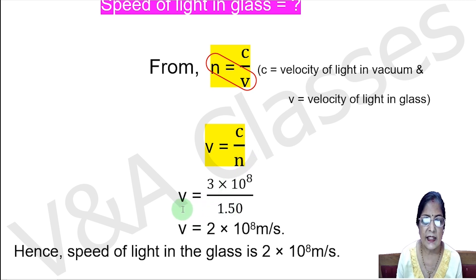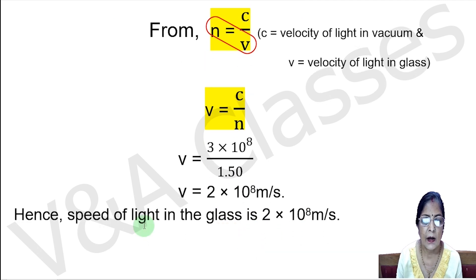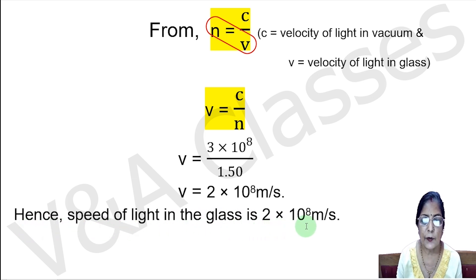Substituting the values: v equals 3 multiplied by 10 to the power 8 upon 1.50, which gives us 2 multiplied by 10 to the power 8 meters per second. Hence, the speed of light in glass is 2 multiplied by 10 to the power 8 meters per second.